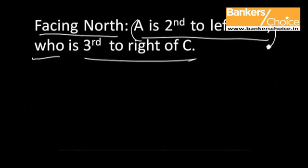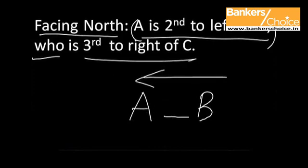Here again the first part of the sentence is A is second to the left of B. So we can say that B comes here and A is second towards the left of B. That is nothing but in this direction.